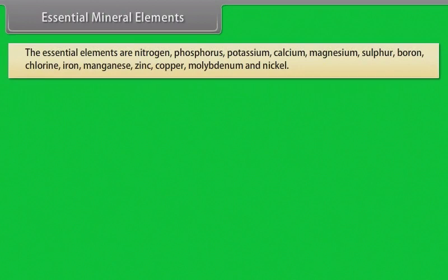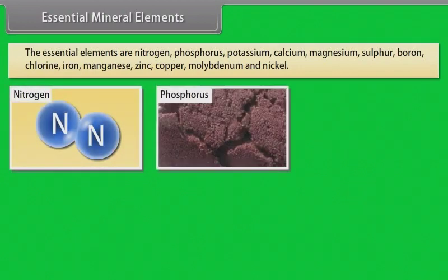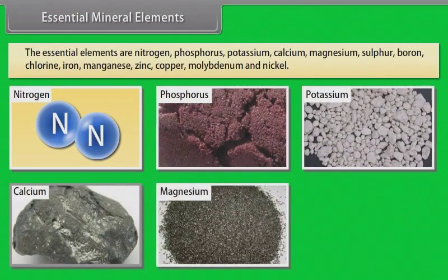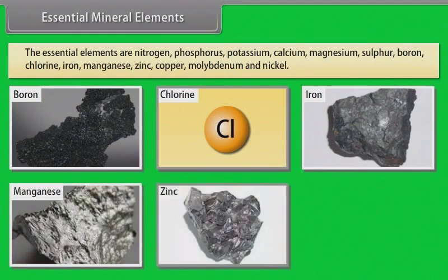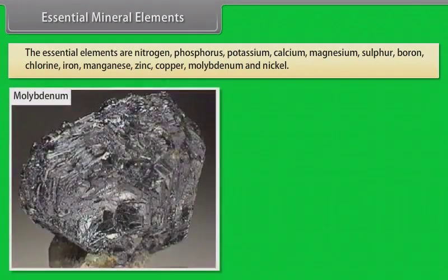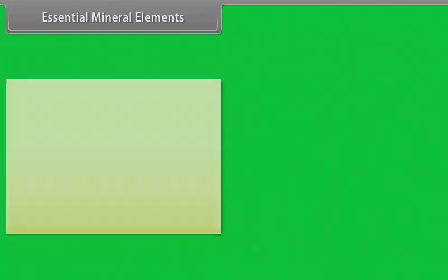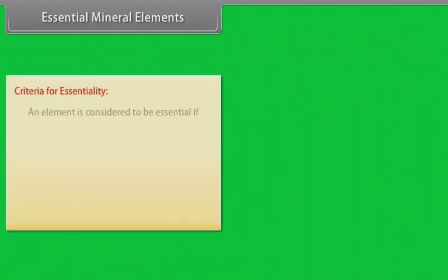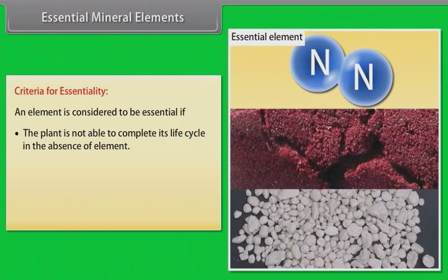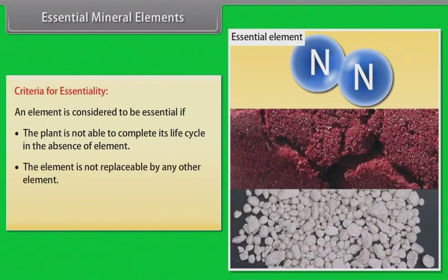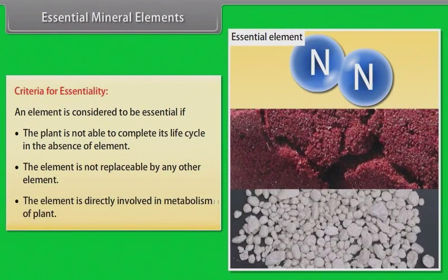Essential mineral elements include Nitrogen, Phosphorus, Potassium, Calcium, Magnesium, Sulfur, Boron, Chlorine, Iron, Manganese, Zinc, Copper, Molybdenum, and Nickel. Criteria for essentiality: an element is considered to be essential if the plant is not able to complete its life cycle in the absence of the element, the element is not replaceable by any other element, and the element is directly involved in the metabolism of the plant.